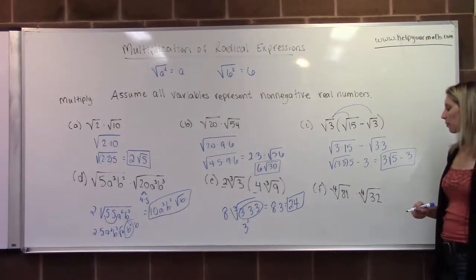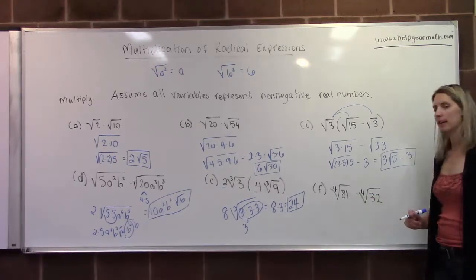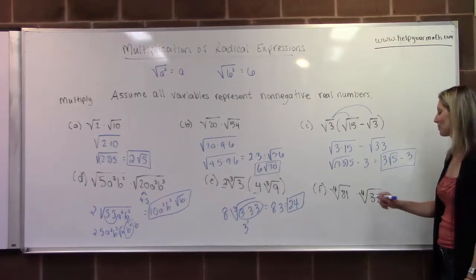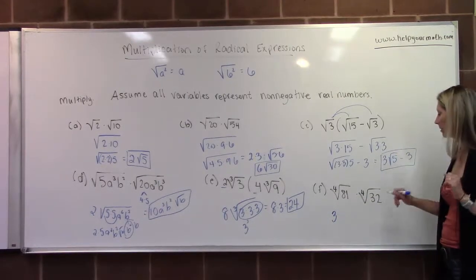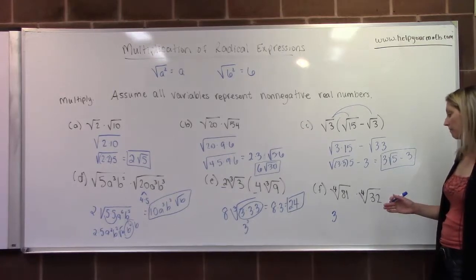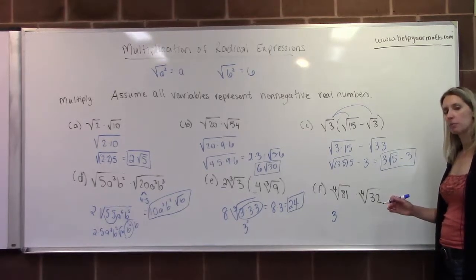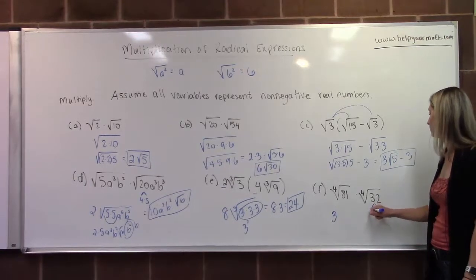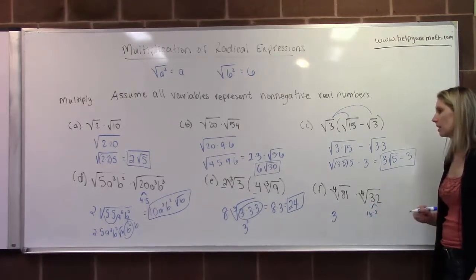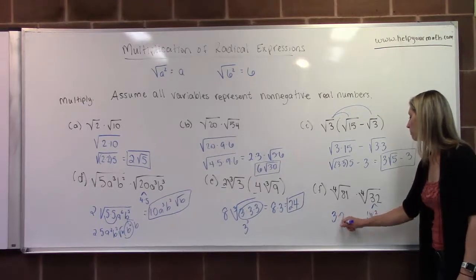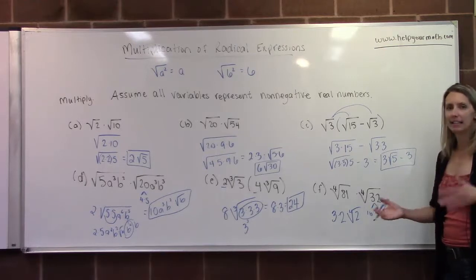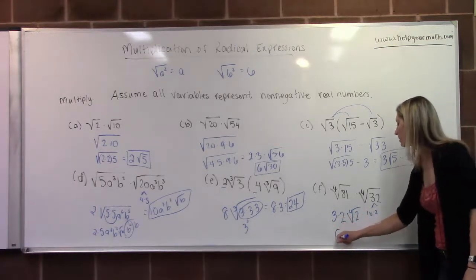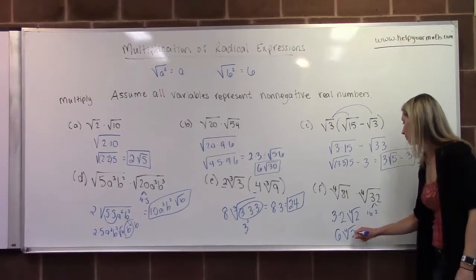The last example: the 4th root of 81 times the 4th root of 32. 81 is a perfect 4th power whose root is 3, so we write that directly. For 32: the largest perfect 4th power factor is 16, so we write 32 as 16 times 2. The 4th root of 16 is 2, so 2 pops out of the radical, leaving 2 under the radical. Multiplying the outside coefficients: 3 times 2 is 6, and the 4th root of 2 stays. The final answer is 6 times the 4th root of 2.